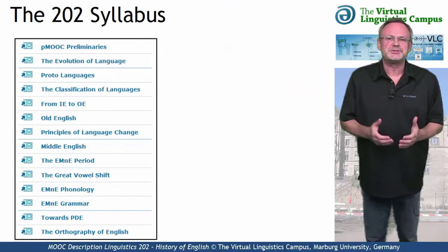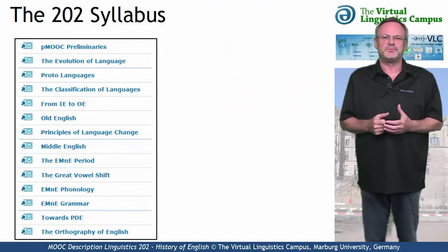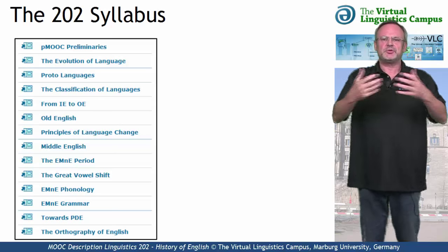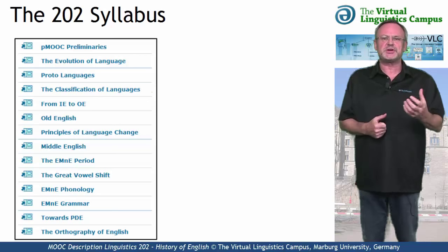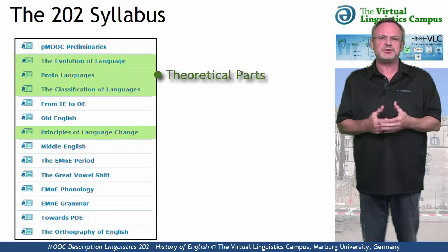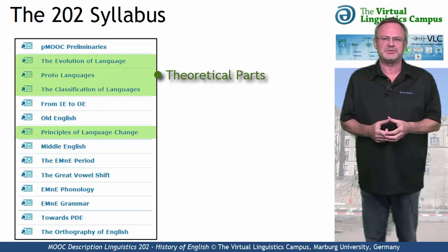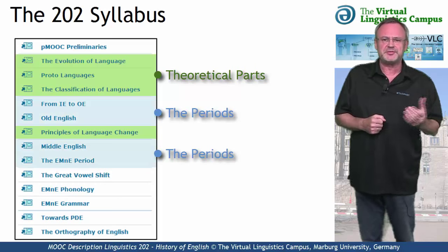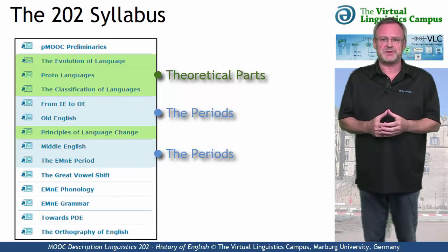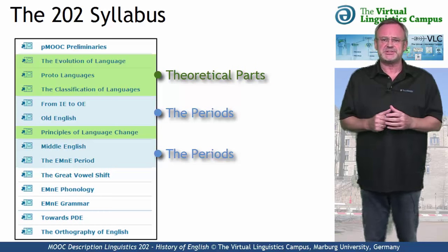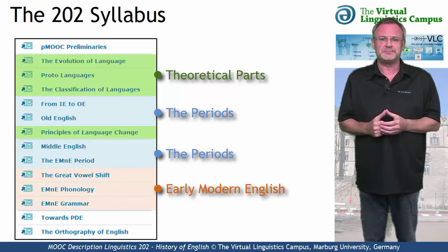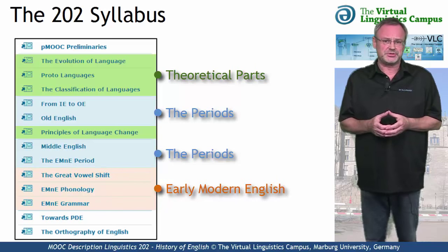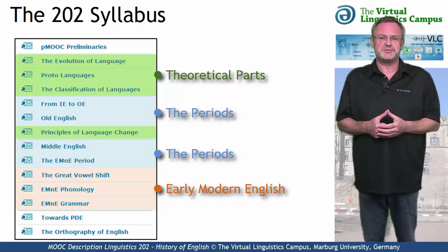Let us now look at the content of Linguistics 202. The class is subdivided into three central parts. In order to understand the development of English, we will first look at the central principles of reconstructing and classifying languages. The second part is devoted to the developmental phases of English and their central linguistic aspects, with special emphasis on early modern English phonology, including a detailed discussion of the great vowel shift — one of the most influential sound shifts in English.